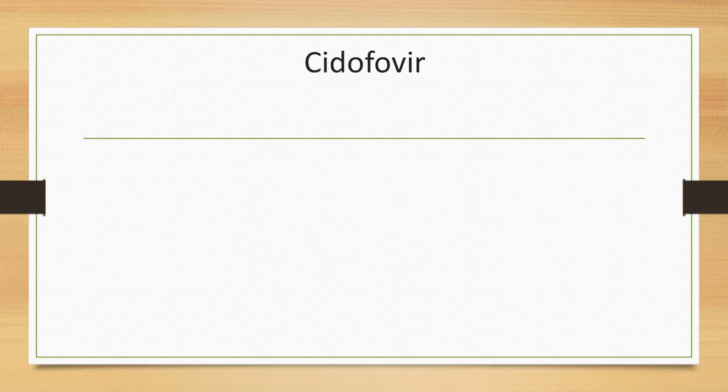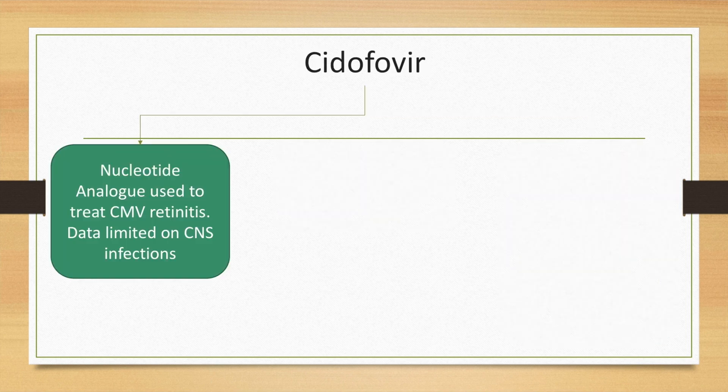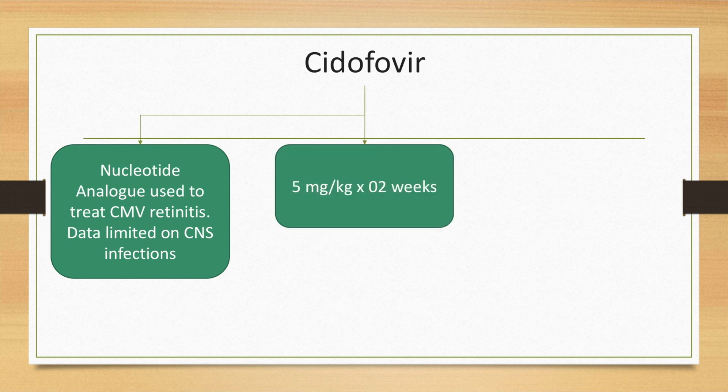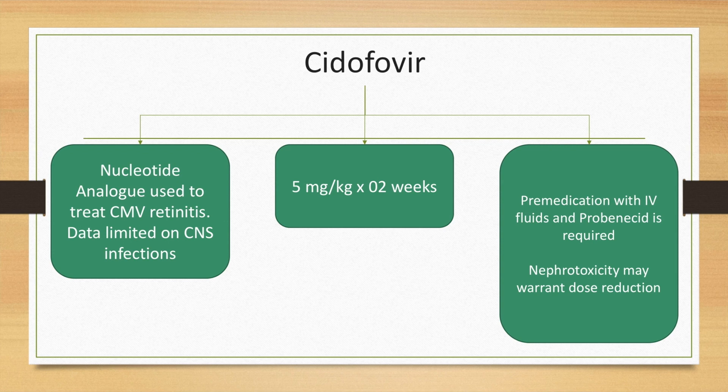The third option for cytomegalovirus treatment is cidofovir, a nucleotide analog used to treat CMV retinitis. However, data is limited for CNS infections. It is given at a dose of 5 mg per kg for 2 weeks, and pre-medication with IV fluids and probenecid is required because of hyperuricemia and nephrotoxicity, which may warrant dose reduction.